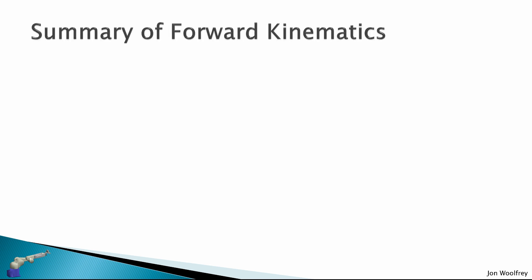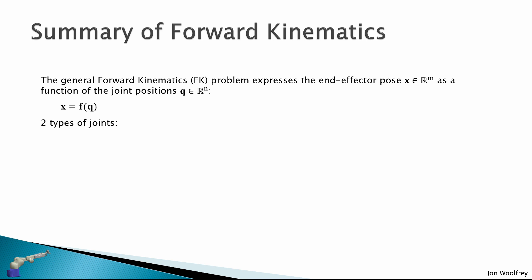To summarize this lecture on forward kinematics, the general forward kinematics problem expresses the end effector pose X in M dimensions as a function of the joint positions Q in N dimensions. That is, X is a vector function of Q. Now, we had two types of joints.